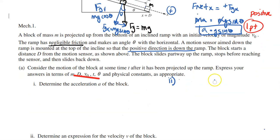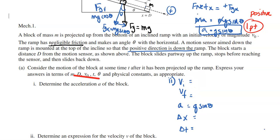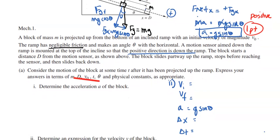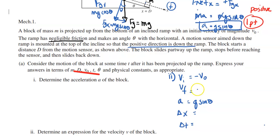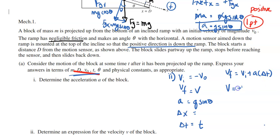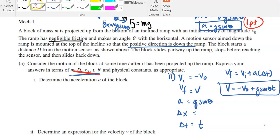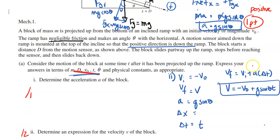Now for part AI2, we want to find the velocity V of the block. We're given a constant acceleration from AI. Using our constant acceleration equation with VI, VF, A, ΔX, ΔT: acceleration is g sinθ, still the same situation. The initial velocity is going up the ramp initially, which is the negative direction because downwards was positive. VF is just V and ΔT is just time T. Using VF = VI + AΔT, we get V = -V₀ + g sinθ · T. The rubric gives one point for the correct equation and one point for V₀ having a negative sign.